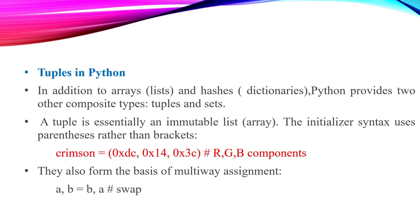Python provides arrays, hashes, lists, and dictionaries. A tuple is essentially an immutable list — it is like an array but uses parentheses rather than brackets for initializer syntax. For example, there is a variable called rgb_components. Tuples also form the basis of multi-way assignment: a, b = b, a — this is a swap, where a gets b's value and b gets a's value.